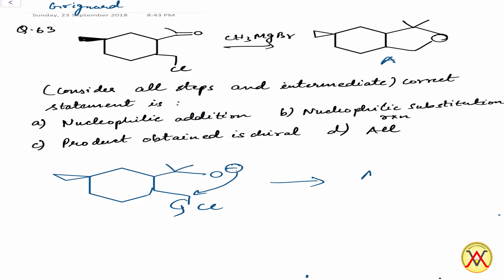So what are the steps involved in this reaction? The first step was nucleophilic addition of the Grignard reagent, and the second step was a nucleophilic substitution reaction. The final product A has a chiral centre as well as no plane of symmetry or centre of symmetry, so it is chiral as well.